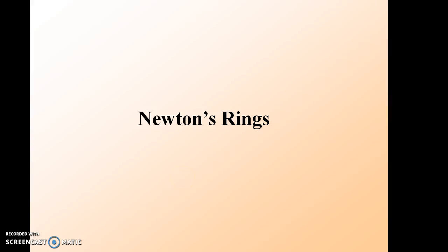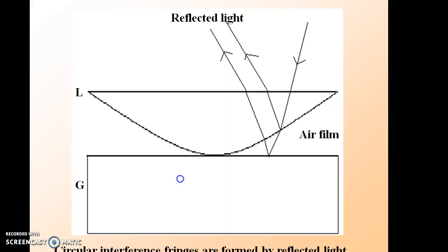Hello. In this topic, we will be dealing with the determination of wavelength of monochromatic light by Newton's rings. Newton's rings are produced when a plano-convex lens of large radius of curvature is placed on the plain glass plate. Then a wedge-shaped air film is produced between the lower surface of the lens and upper surface of the glass plate.